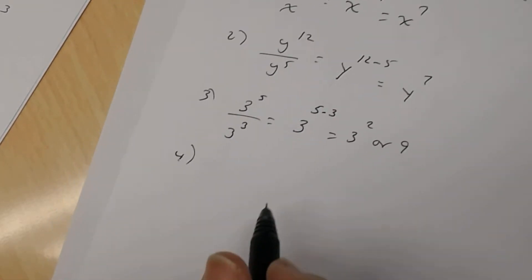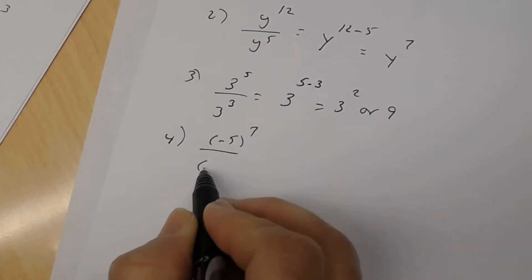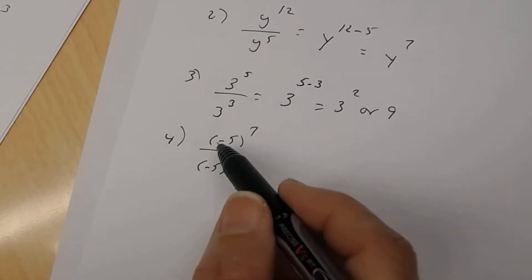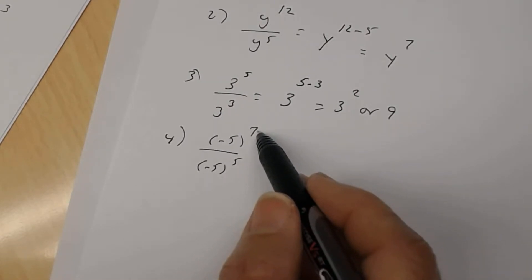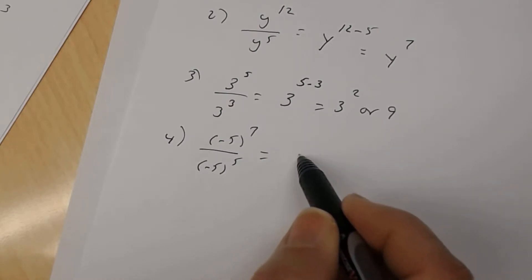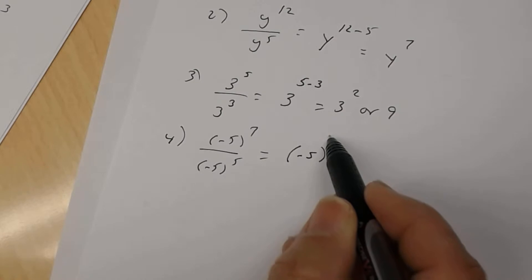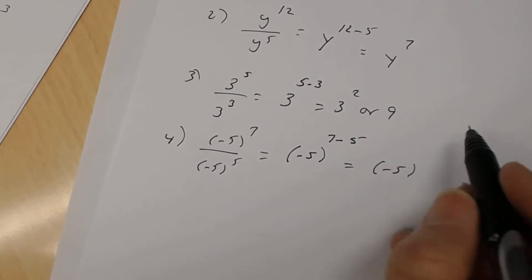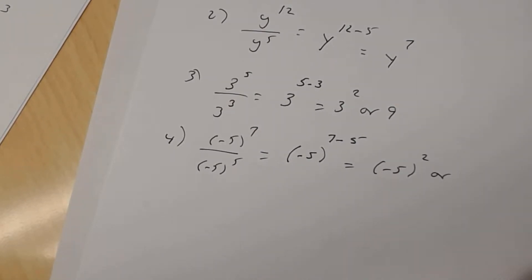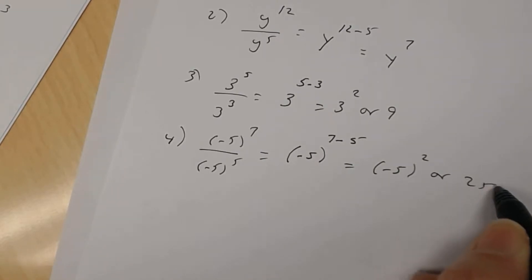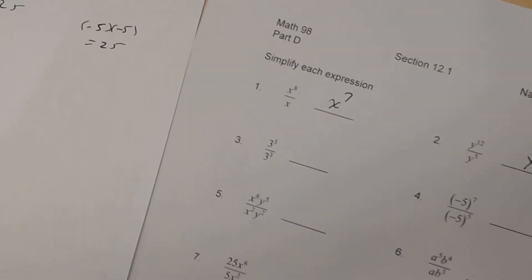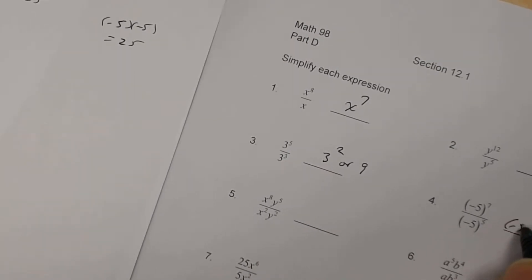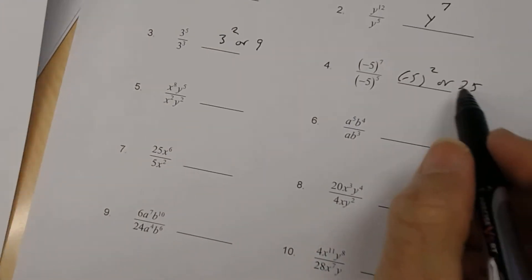Number 4: you have negative 5 to the 7th divided by negative 5 to the 5th. The base here is negative 5 — since it's in parentheses, that's your base. It's being raised to the 7th in the numerator and to the 5th in the denominator. So you rewrite the base, negative 5 in parentheses, raised to the 7th subtract 5, giving negative 5 squared. Or you can say negative 5 times negative 5 is positive 25. So number 3 is 3 squared or 9, and number 4 is negative 5 squared or 25.